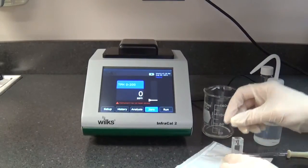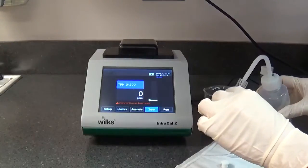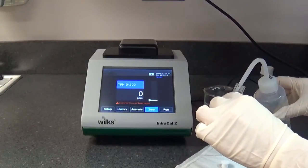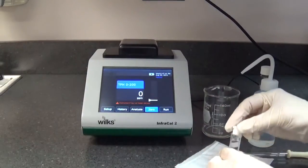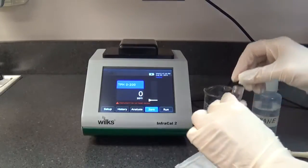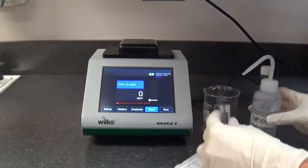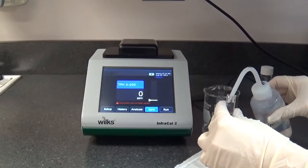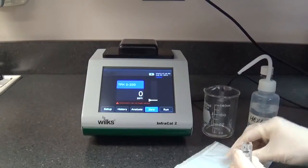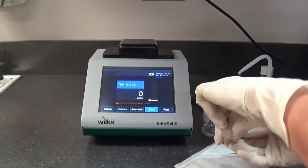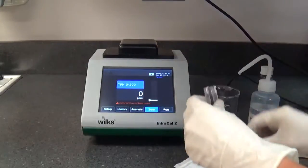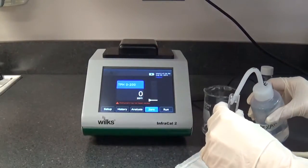Ensure that the cuvette is clean. Hexane is recommended for cleaning as it evaporates more quickly than tetrachloroethylene or S316. To clean, fill and empty the cuvette two to three times. Allow the hexane to evaporate prior to filling the cuvette with zero solvent. Do not use water to clean the cuvette.